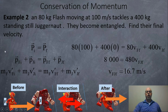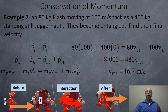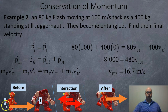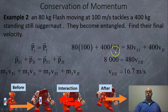Here's another example: an 80-kilogram Flash moving at 100 meters per second tackles a 400-kilogram, standing-still Juggernaut. They become entangled or stuck together — find their final velocity. We have P_I = P_F, using F for Flash and J for Juggernaut: P_FI + P_JI = P_FF + P_JF. Subbing in numbers: 80 kg × 100 m/s + 400 kg × 0 = 80 × V_final(Flash) + 400 × V_final(Juggernaut).